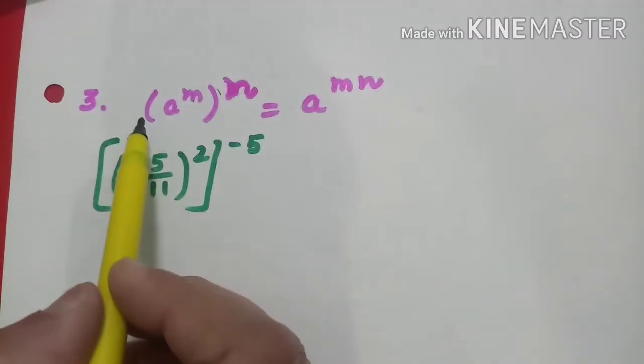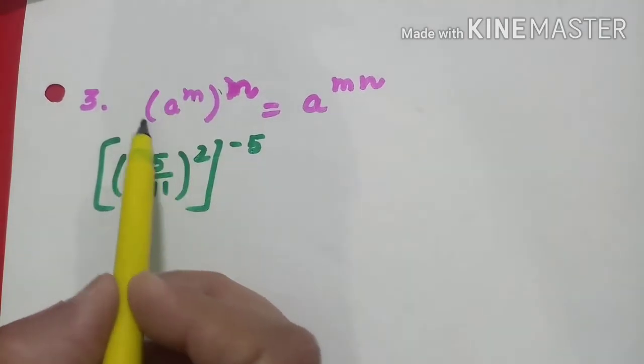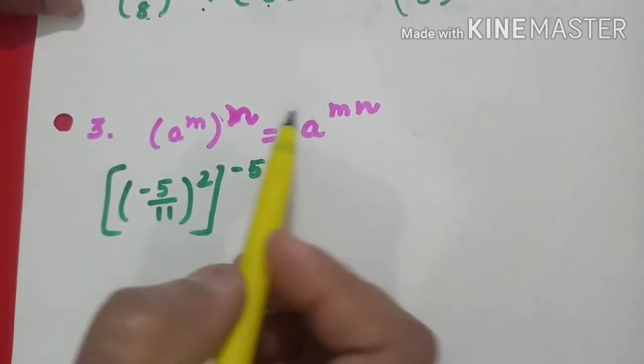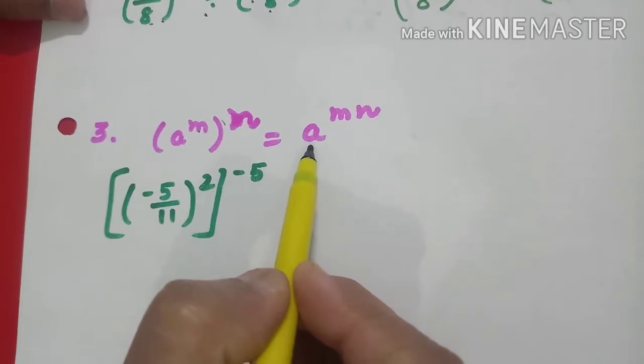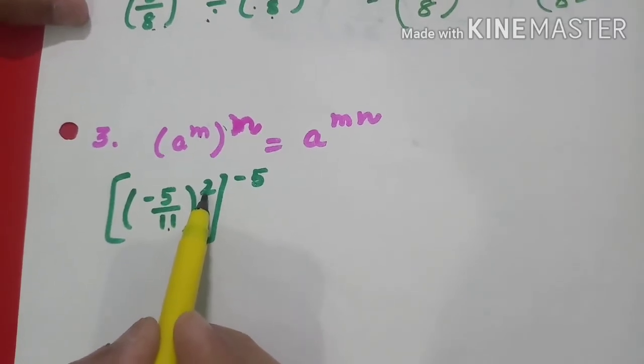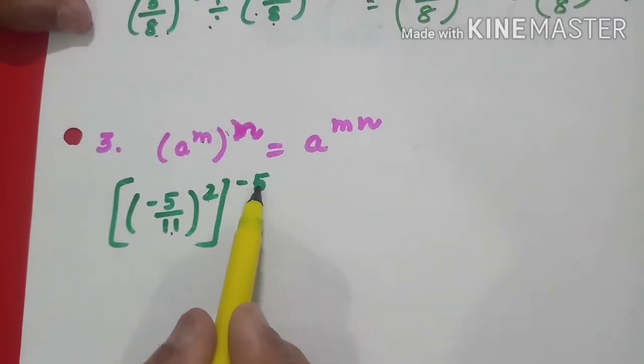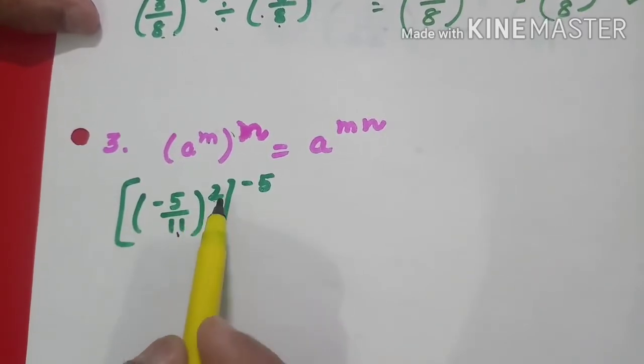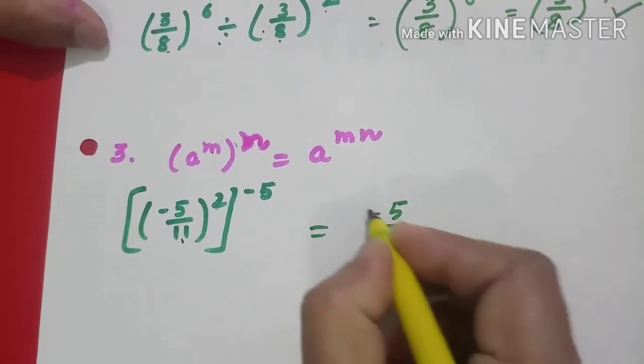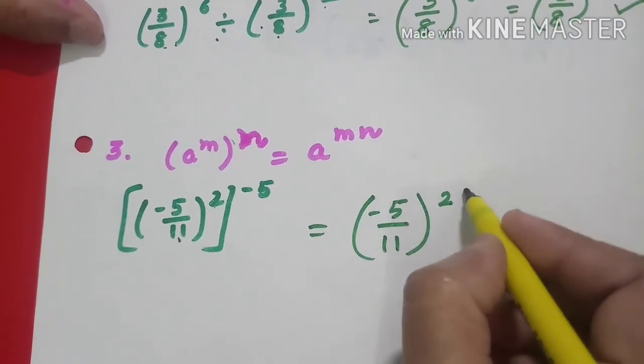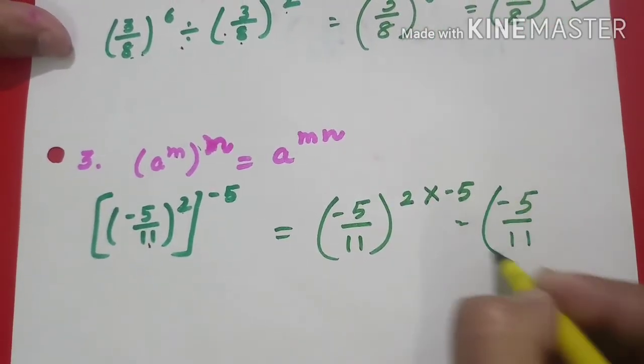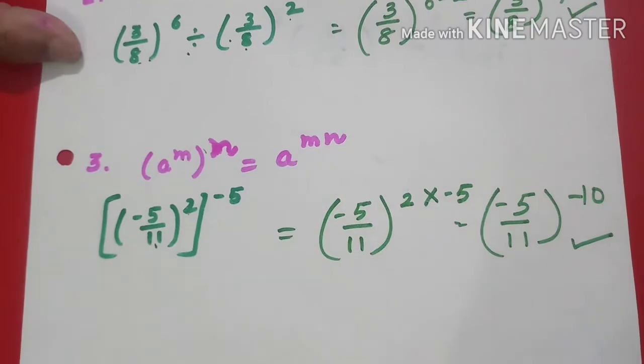The third law says if I have an exponential number like a^m and it has a whole power n, then powers will get multiplied on the base. Suppose I have [(-5/11)²]^(-5). What will happen? Both powers will get multiplied on the base -5/11. So the power becomes 2 × (-5) = -10. Therefore, (-5/11)^(-10) will be my answer.